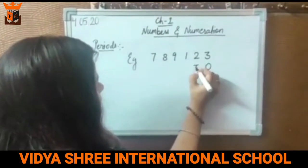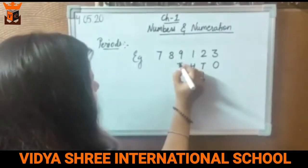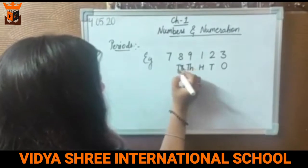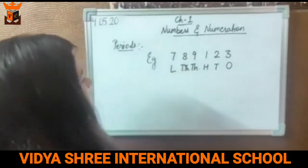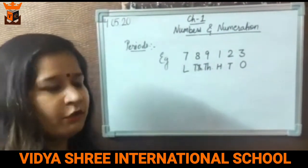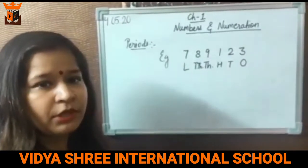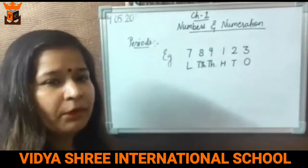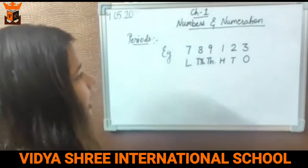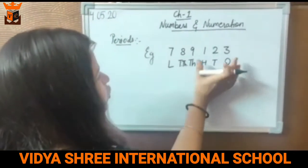The place values are 1, 10, 100, 1000, 10,000 and lakh. So according to the Indian place value system, we have to put the comma in this number and we have to see how many periods there are.